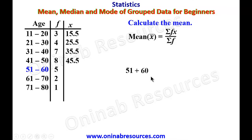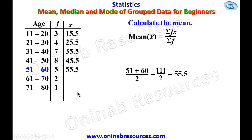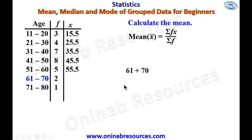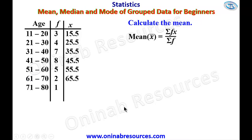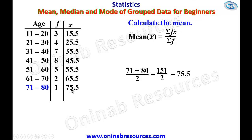For 51 to 60, we add 51 and 60 and divide the sum by 2 — that is 111 divided by 2 — giving 55.5 as the mid-value. For 61 to 70, we get 131 divided by 2, which gives 65.5. Finally, for 71 to 80, we have 151 divided by 2, giving 75.5 as the mid-value.